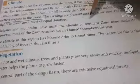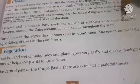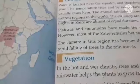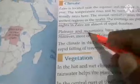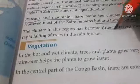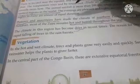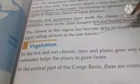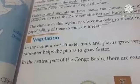The climate of southern Zaire is more moderate. However, most of Zaire remains hot and humid throughout the year. The plateaus and mountains have made the southern Zaire climate moderate. The climate in this region has become drier in recent times due to the rapid cutting down of trees in the rainforest.